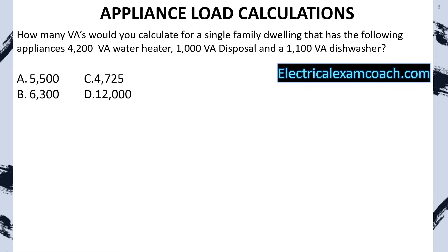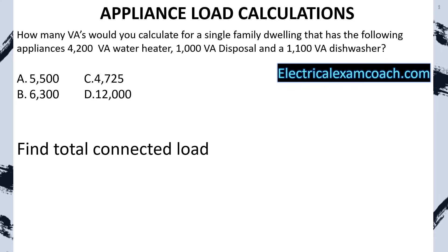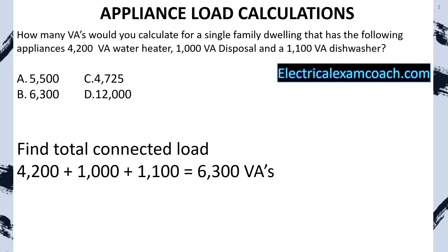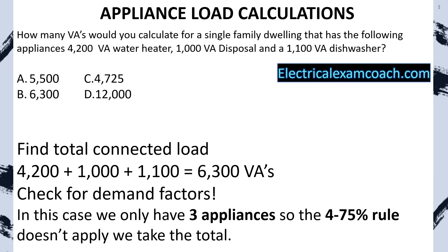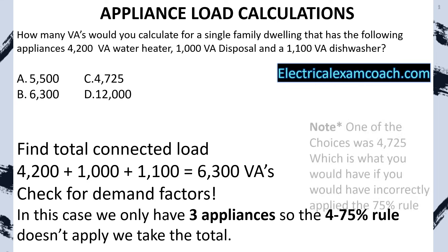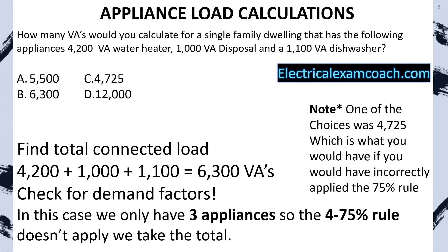How many VAs would you calculate for a single family dwelling that has the following appliances? A 4,200 VA water heater, a 1,000 VA disposal, and an 1,100 VA dishwasher. First, we find the total connected load — we total all that up, and it equals 6,300 VAs. Now we check for demand factors. In this case, we only have three appliances, so the four-or-more 75% rule does not apply. One of the answer choices was as if you had incorrectly applied the 75% rule, but because we only have three appliances, we don't apply any demand factor at all, and we take the total connected load at 6,300. Great job.